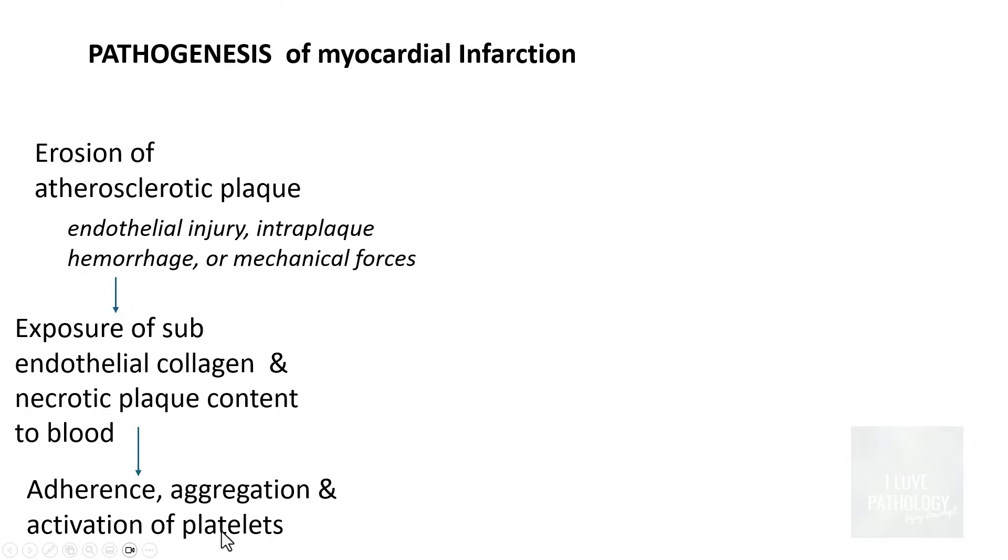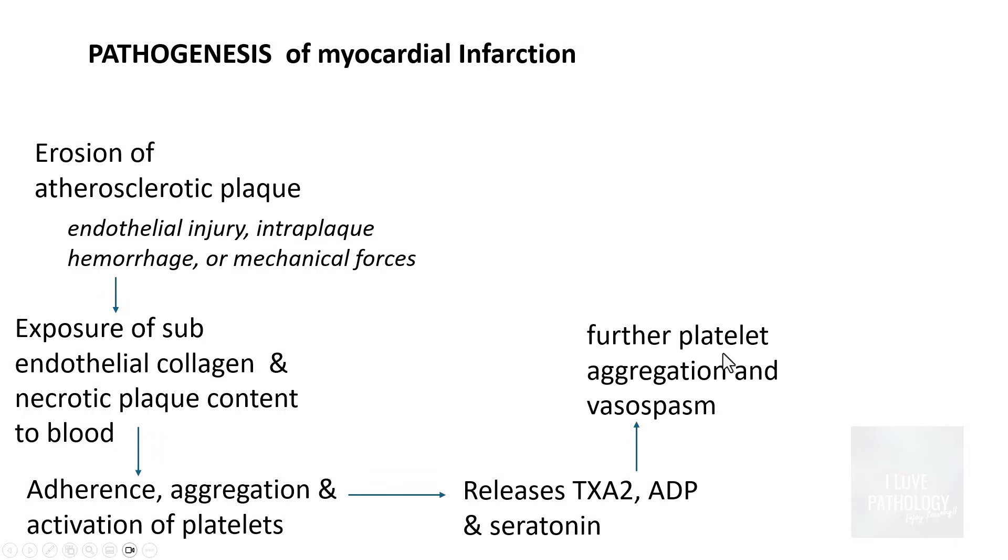Along with aggregation, there is activation of platelets which leads to release of thromboxane A2, adenosine diphosphate, and serotonin. Release of these mediators results in further aggregation of platelets and vasospasm. So this is one way of causing aggregation and vasospasm.